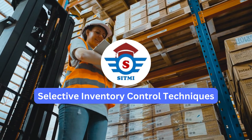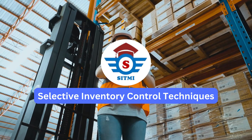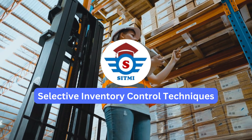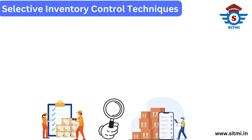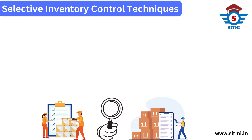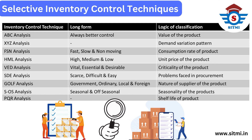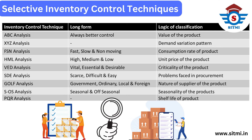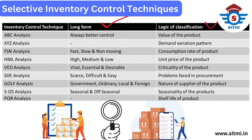Dear learners, we have already seen that selective inventory control is one of the best and strategic methods used in inventory management. Now let's understand the different techniques used in industry for selective inventory control. There are basically eight types of techniques which are frequently used in industry. We will talk about each technique in detail in coming lessons, and we will understand the long form of each technique and the logic of classification used in these eight techniques.